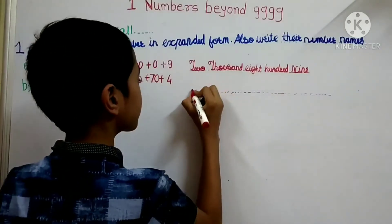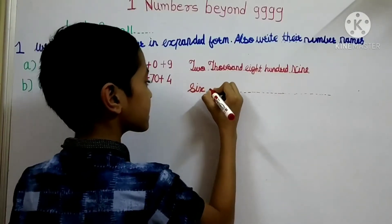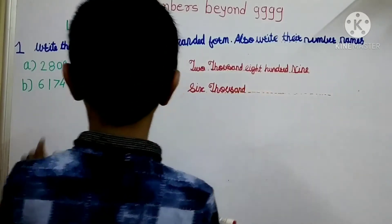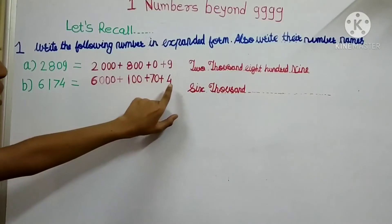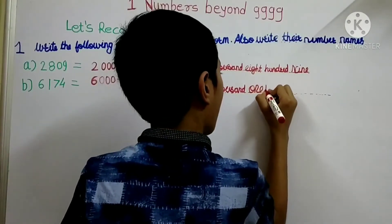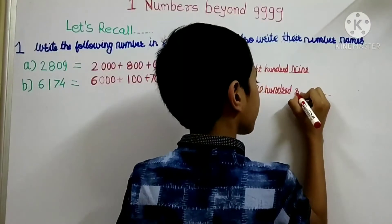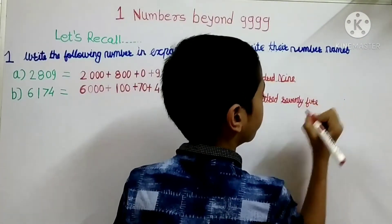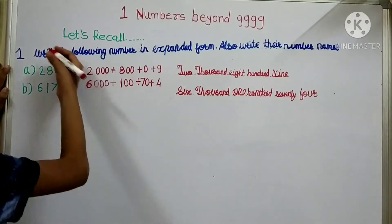Now write the number name for 6174: six thousand, one hundred seventy-four. We have completed the first let's recall question. Now let's do the second recall question.